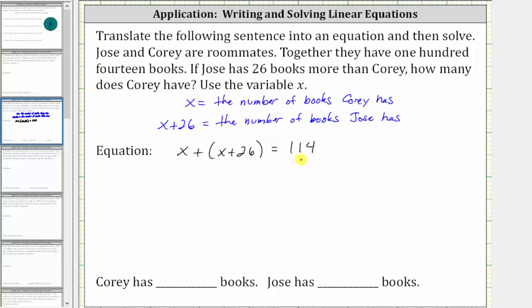The first step in solving the equation is to simplify the left side. x plus x plus 26 simplifies to 2x plus 26, since x and x are like terms.